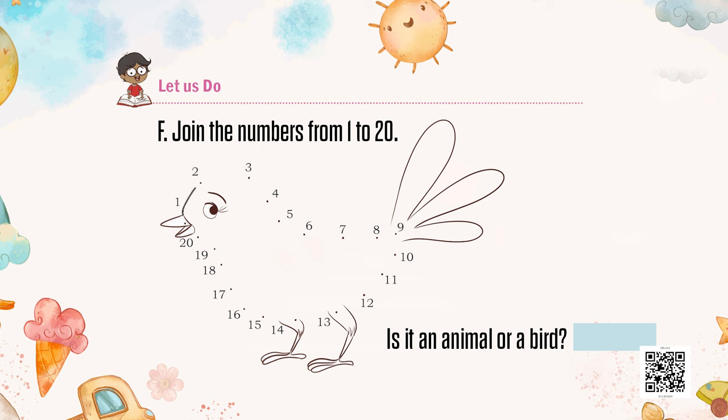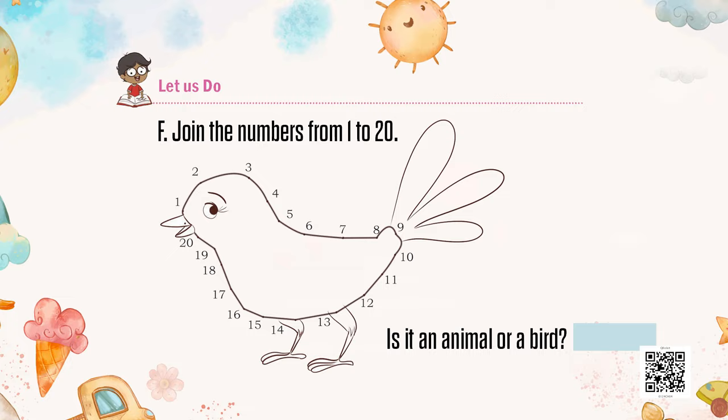Arnav, till now we have done a lot of activities related to counting and we played with numbers. Now it's drawing time! Would you like to draw something? Yes. We will be using numbers again. Let us see — if we join the numbers from 1 to 20, what is going to appear? 1, 2, 3, 4, 5, 6, 7, 8, 9, 10, 11, 12, 13, 14, 15, 16, 17, 18, 19, 20. Are you able to identify which animal or bird this is? It's a bird — a chick!